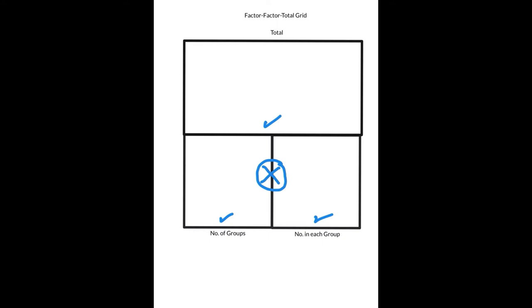I've got labels here, and I don't usually label a part-part-whole grid, but for multiplication and division there's a really important point: the two factors with manipulatives or with real-life situations actually have two different meanings. Typically, with many multiplication and division problems, we think about how many groups we have that are equally sized, and then we also think about the size of one of those parts or groups.